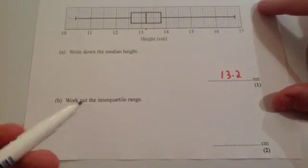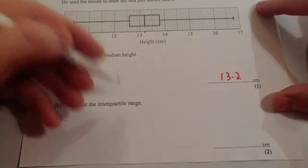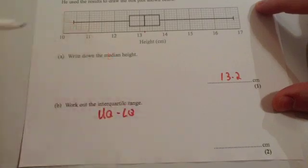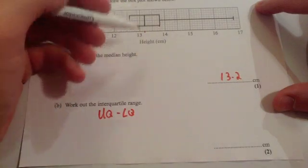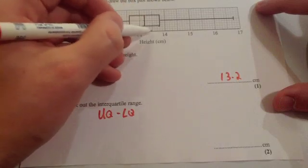The next one said work out the interquartile range. The interquartile range is the upper quartile minus the lower quartile. The upper quartile is here and the lower quartile is here, so you just need to write down what those two values are and subtract them.